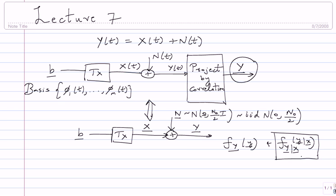The problem has become a simple vector problem. Given a certain joint distribution for x and y, you have to find what x could have been given that you observe y — the classic detection problem. I know x and y have a certain joint distribution, I observe y, and I must pick the x that could have been transmitted. My goal is to minimize probability of error. We will see later how to define the detection problem carefully and do these things efficiently.